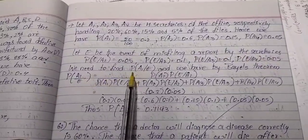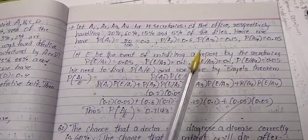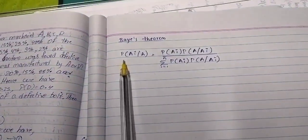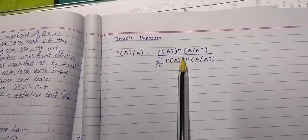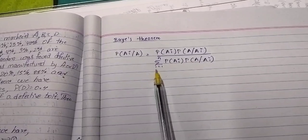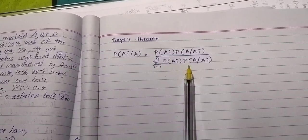We need to find P(A1|E) and we have by Bayes theorem. The Bayes theorem formula is P(Ai|A) = P(Ai) × P(A|Ai) divided by summation of i = 1 to n, P(Ai) × P(A|Ai).